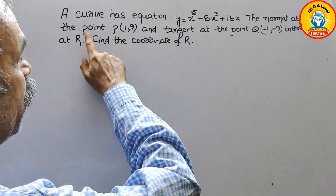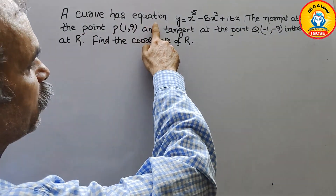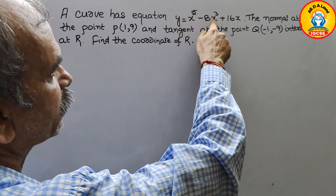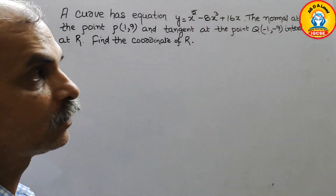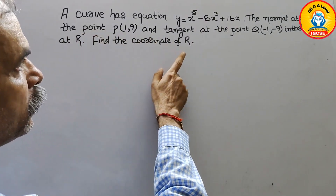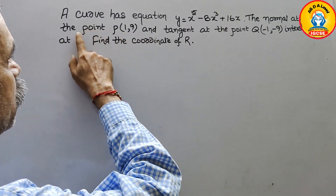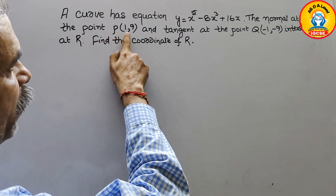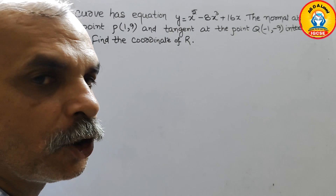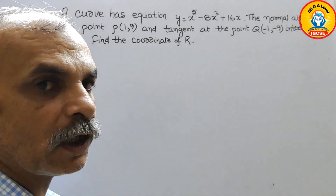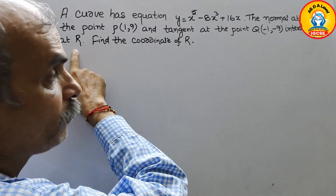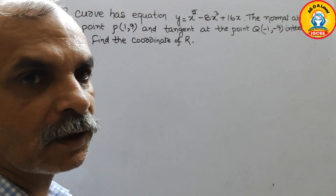The question is: a curve has equation y = x⁵ - 8x³ + 16x. The normal at point P(1, 9) and the tangent at point Q(-1, 9) intersect at R. Find the coordinates of R.